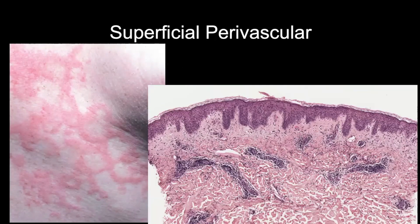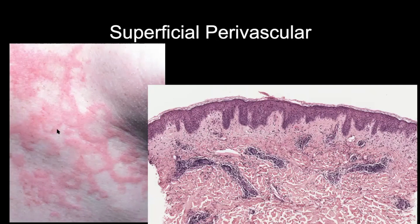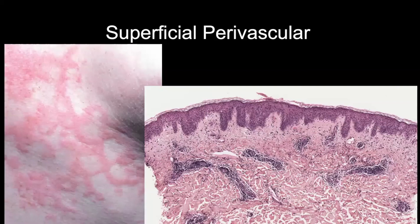Here's a clinical example of urticaria. There's a smooth overlying surface, maybe a little raised. Generally this erythema, if you pressed on it, would blanch. It's more pink than red, and that often correlates with either dilated blood vessels or with inflammatory infiltrates.